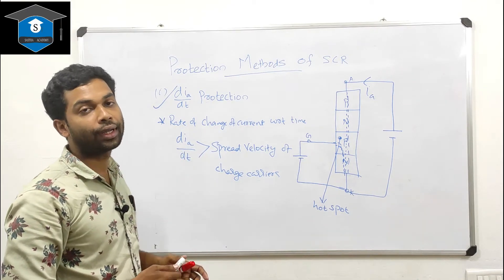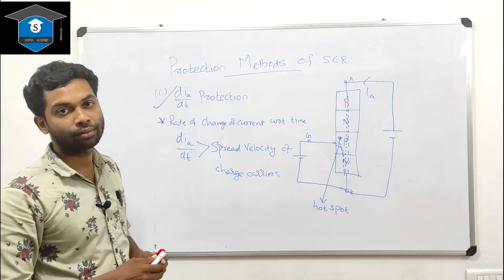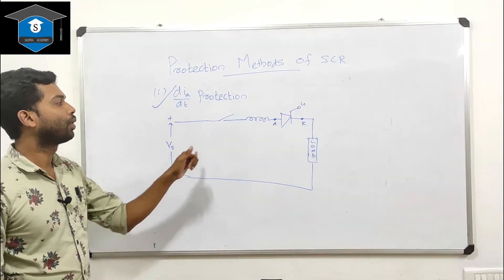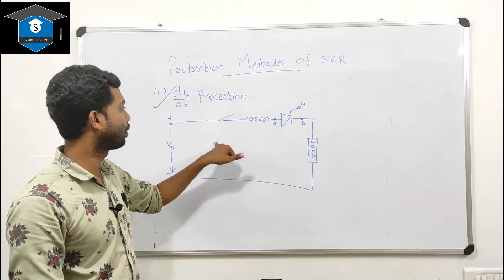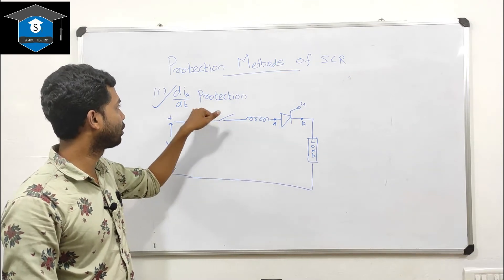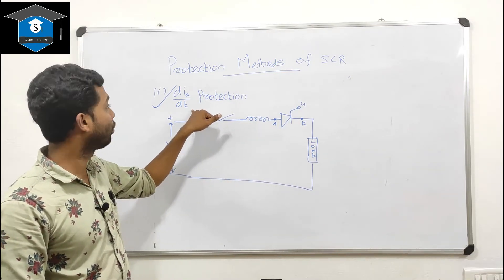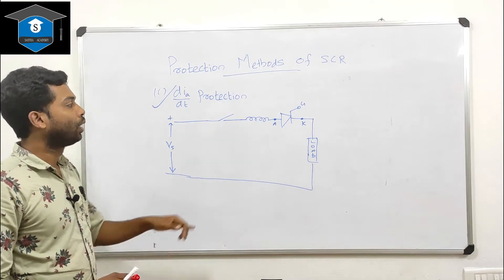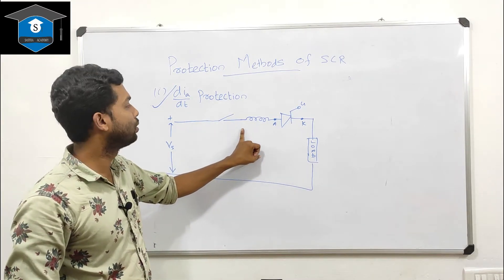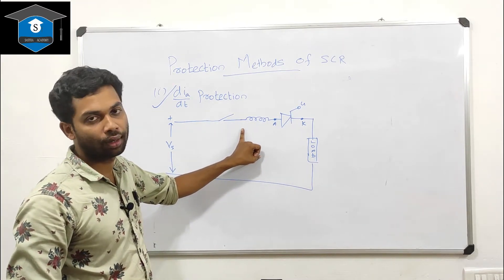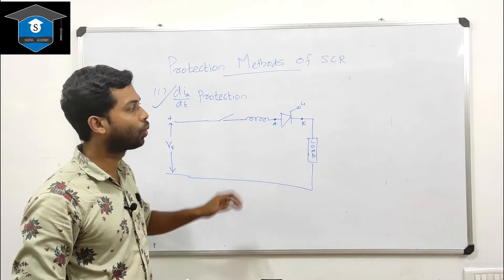In order to protect the SCR from high di/dt, a small inductor is connected in series with the SCR. This inductor connected in series with the SCR is used for di/dt protection.